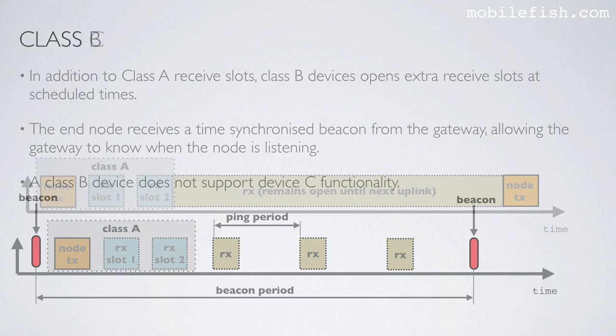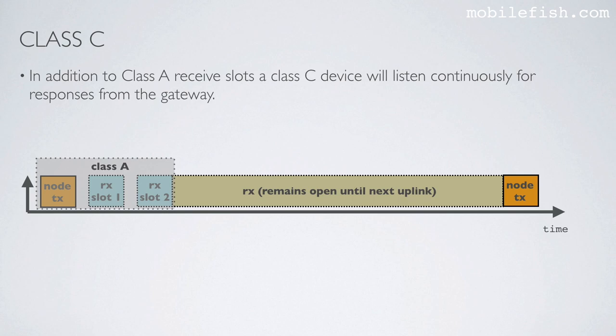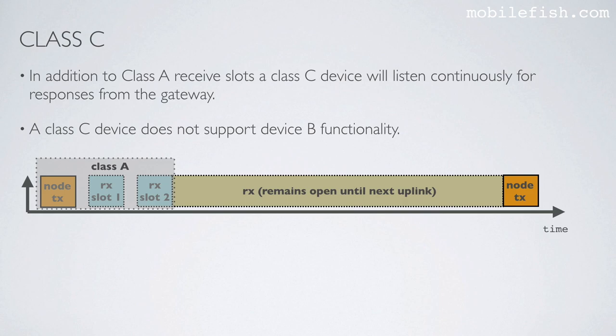Last, let's look at Class C devices. In addition to Class A receive slots, a Class C device will listen continuously for responses from the gateway. As you can see, Class C devices also incorporate Class A behavior with its standard two receive slots. After these two receive slots, Class C devices will continue listening for responses from the gateway until the next uplink transmission. A Class C device does not support Class B functionality.